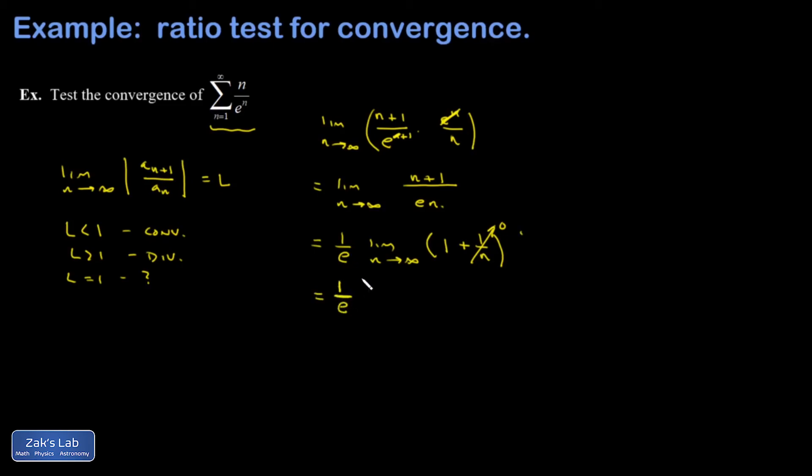e is a number bigger than 1, so 1 over e is less than 1. Therefore our series converges.